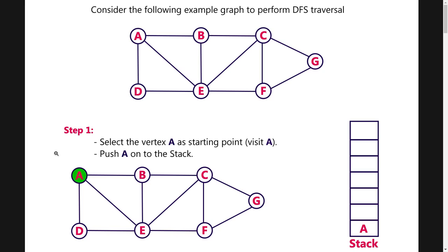Step 1, you have to choose any of the vertex from this graph. So by alphabetical order I am choosing the vertex A which is the starting point of this graph. I have just given the green color marking that it has been visited and it is pushed into the stack as well.